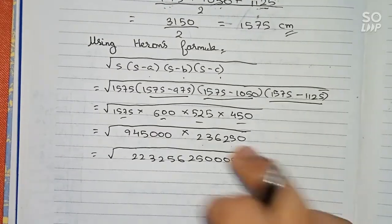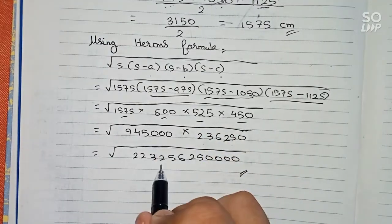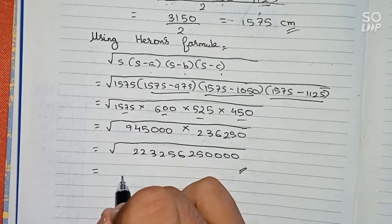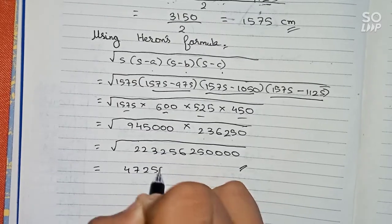This will be the number if we multiply both these numbers. So now the root of this number will become 472,500 meter square. So this will be the area of the triangle.